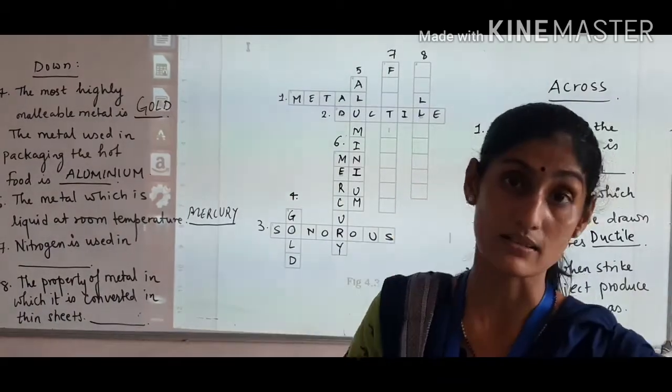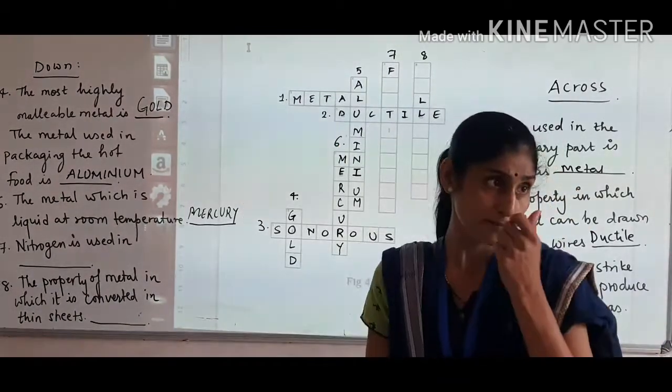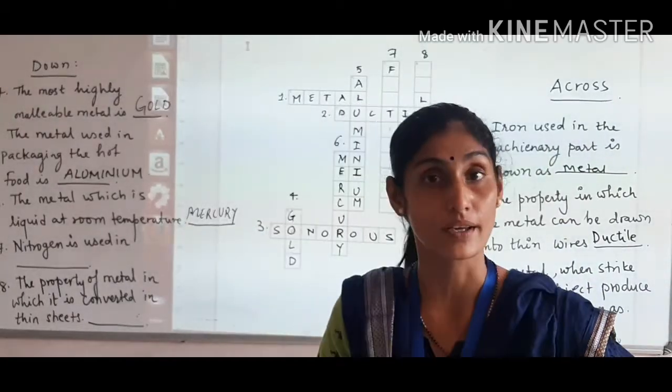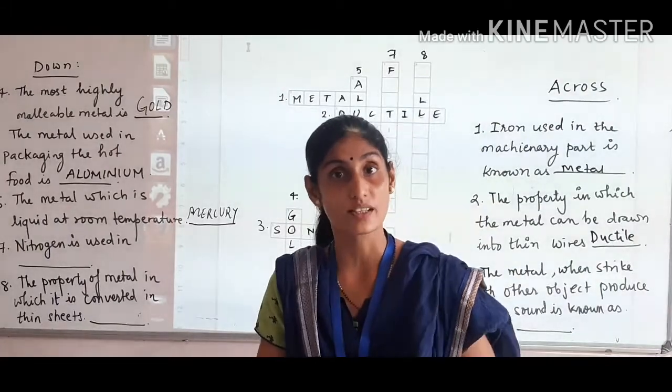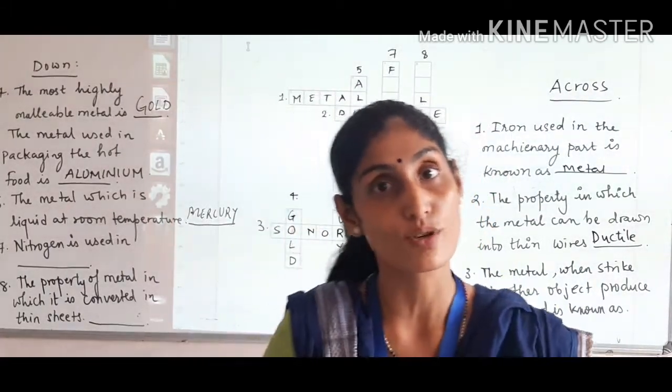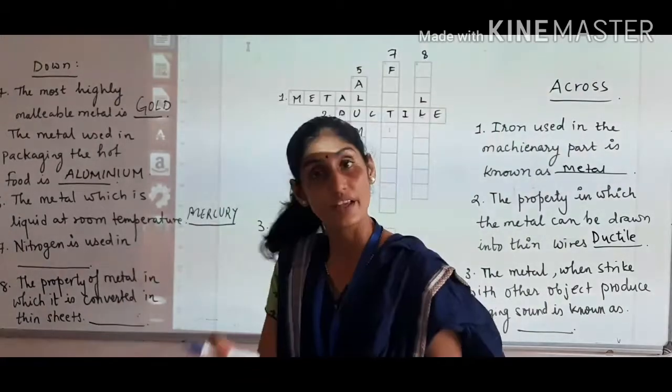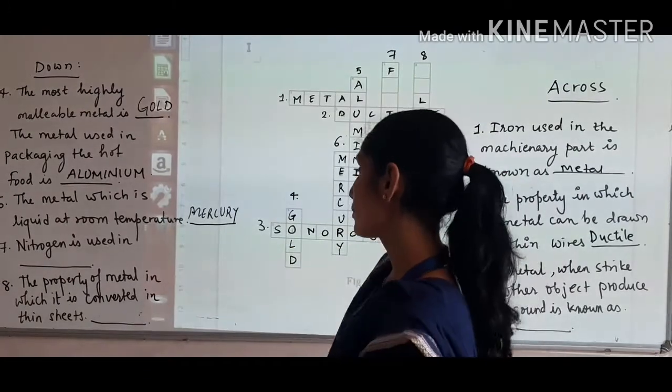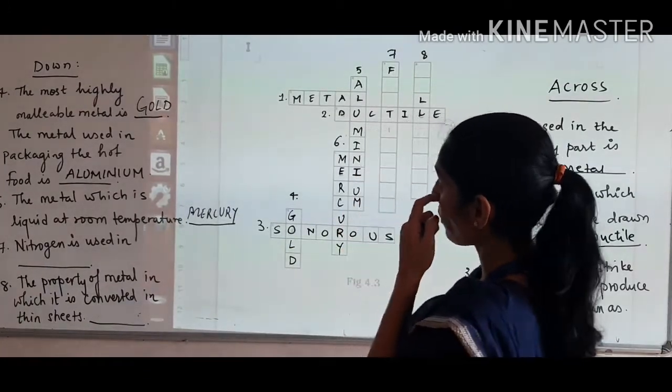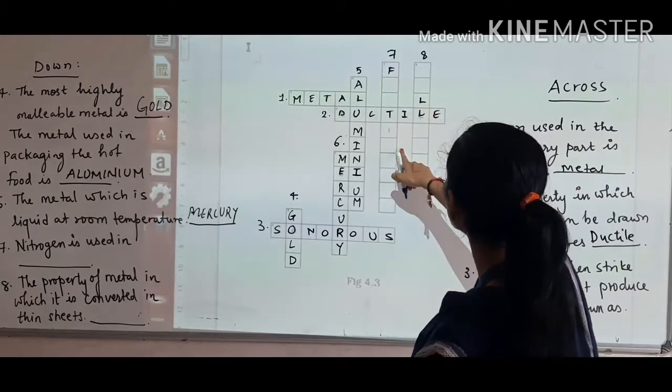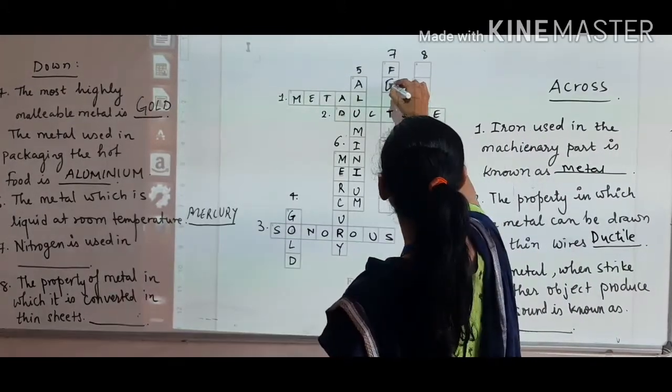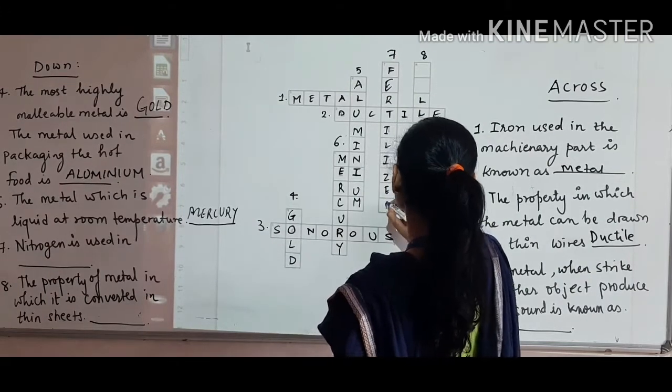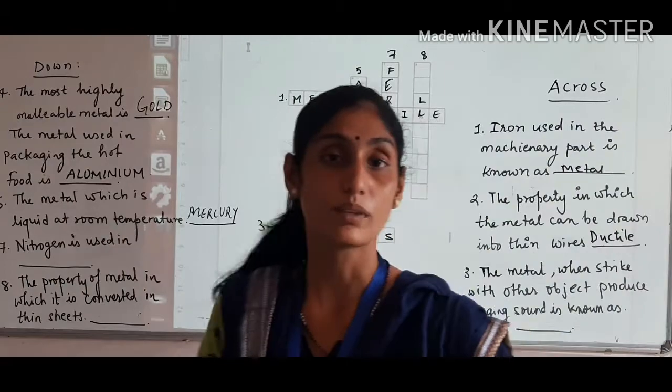Nitrogen is the non-metal. Nitrogen is very important. It is very useful for agriculture and farmers. The most important component is nitrogen, then phosphorus, then potassium. Nitrogen is an agricultural component, a non-metal which is used in fertilizers. Here is nitrogen.